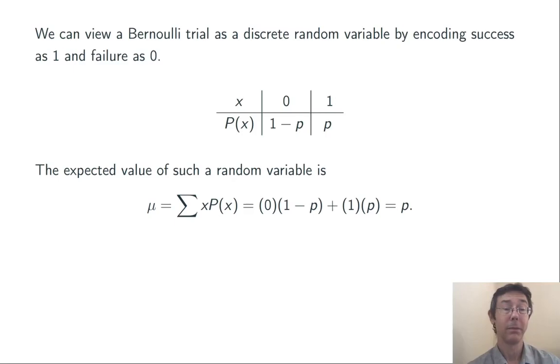Now we can compute an expected value. The expected value of x here is going to be the sum of x times P(x) where the sum is taken over all the possible values of x. Simplifying that down, we get p. The expected value of this random variable is the same as the probability of success on a trial.